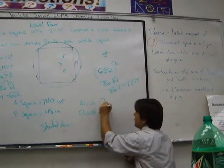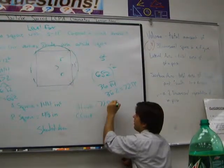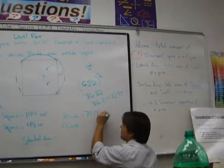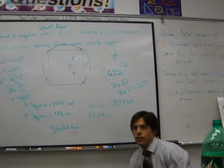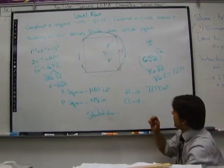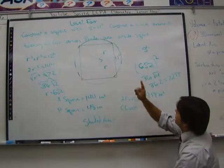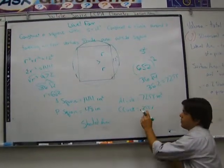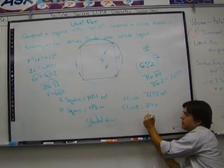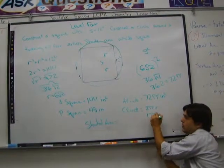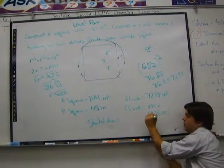The area of the circle is 72 pi inches squared. The circumference of the circle will be 2 pi times the radius. What was the radius again? 6 square root of 2. So, 2 times 6 square root of 2 is? 12 square root of 2 pi.